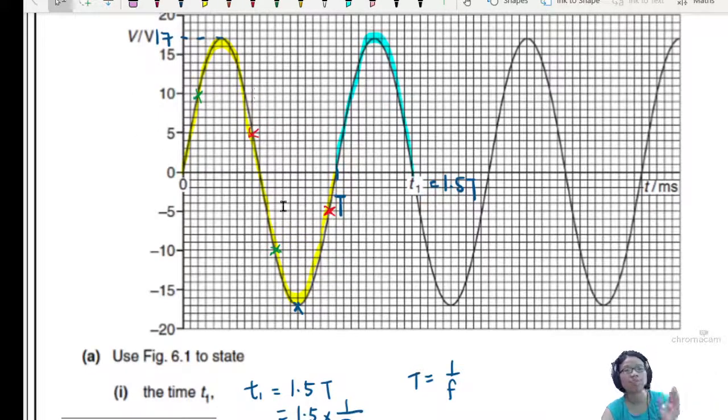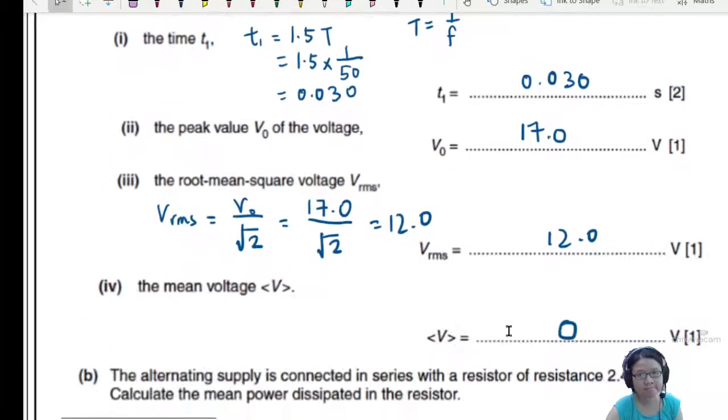Average means you total all the values on the yellow curve and divide by the time. But when you total it, you get zero already.